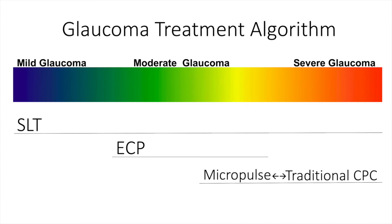We're in a new era where multiple lasers are available to treat the spectrum of disease from mild to severe glaucoma. We can utilize SLT for mild to moderate glaucoma, which has been quite successful even as primary therapy as shown in the most recent LiGHT study reports. ECP can be used either standalone or combined with phacoemulsification for mild to moderate glaucoma as well. As you move towards moderate and severe glaucoma, both micropulse and traditional CPC can be viewed as options. Whether micropulse has fewer adverse events and should be preferred for moderate glaucoma compared to traditional CPC is still up for debate.